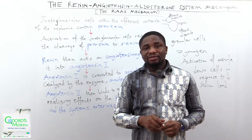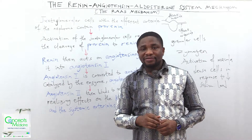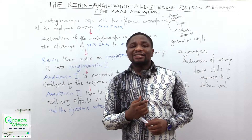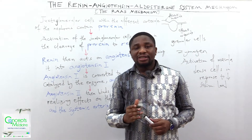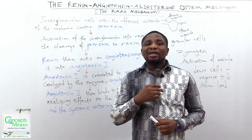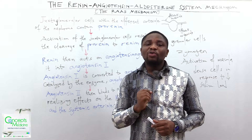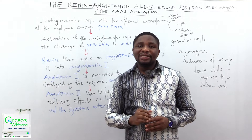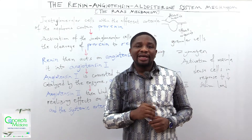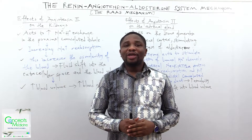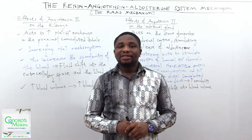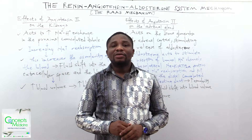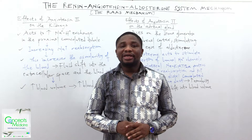Angiotensin-2 has a half-life of only 1 to 2 minutes, after which it will be degraded by peptidases into angiotensin-3 and angiotensin-4. Angiotensin-3 has 100% aldosterone-stimulating activity and only 40% pressure effects, while angiotensin-4 has further decreased systemic effects.